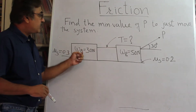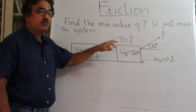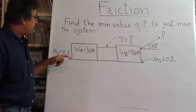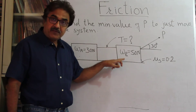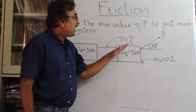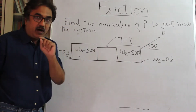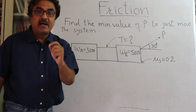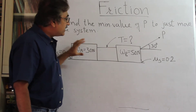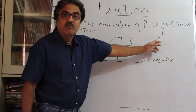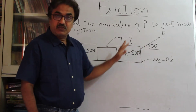So here is the numerical. You have two blocks, block A and block B. You are given the weights. There is a string joining block A to block B. They are resting on a rough surface, and you are given that the coefficient of static friction between block A and the surface is 0.3, and the coefficient of friction between block B and its surface is 0.2. There is a force P pulling block B at an inclination with the horizontal. You are asked to find out the minimum value of P — read that as the value of P required for the system to just move. It is about to move, meaning impending motion, so you can use F = μR.